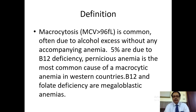The definition: macrocytosis means that the MCV should be at least greater than 96 femtoliters. Commonly it is due to alcohol excess without any accompanying anemia, but 5% are due to vitamin B12 deficiency. Pernicious anemia is the most common etiology of macrocytic anemia in the western world.